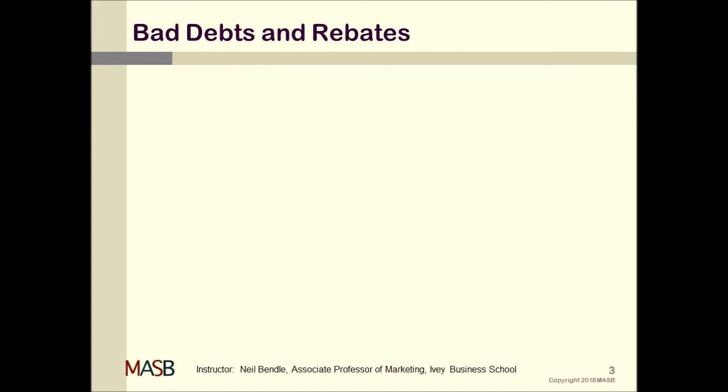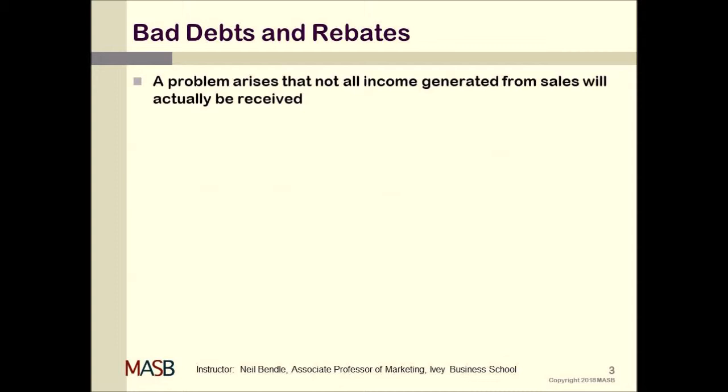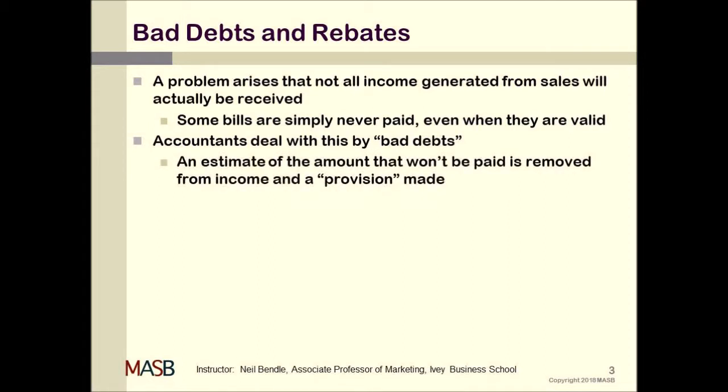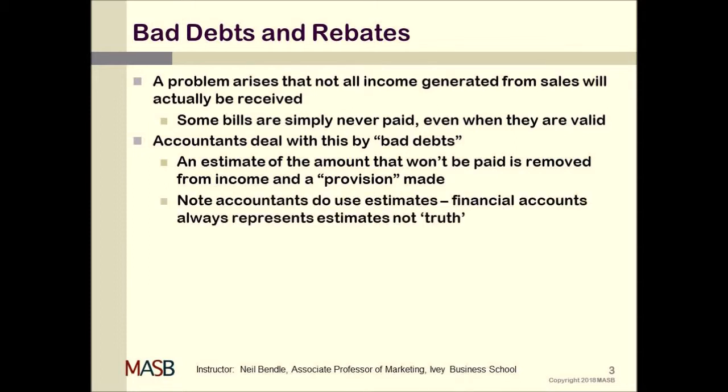Another major problem that occurs is bad debts and rebates. These are situations where someone's promised to pay you, but you never quite know whether they will until they do. The matching principle suggests you should put in the revenue when it's generated, but if it's never paid, it really hasn't been generated. What accountants have solved this with is a bad debt provision — they suggest that some bills are just never going to be paid and take off the value of those bills. They don't really know which bills; they come up with an estimate. Accounts already have a number of estimates in them, and that doesn't mean estimated numbers aren't already there. You can always talk about the benefits of estimated numbers versus the clear problem with estimates being wrong.